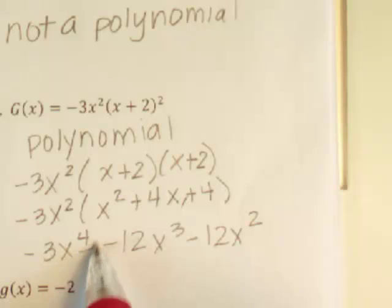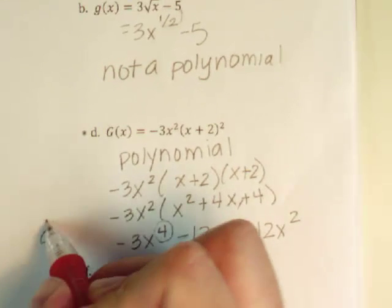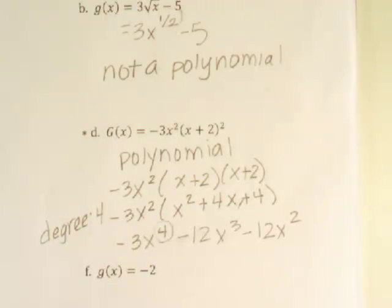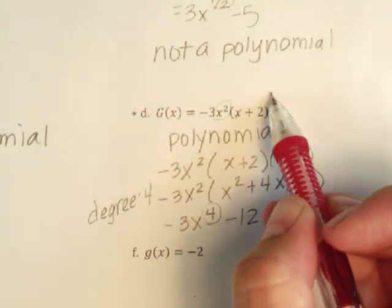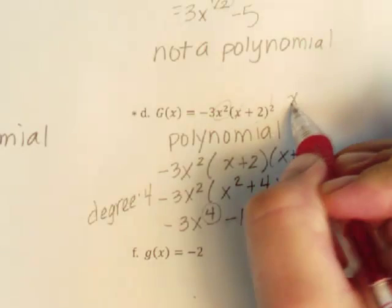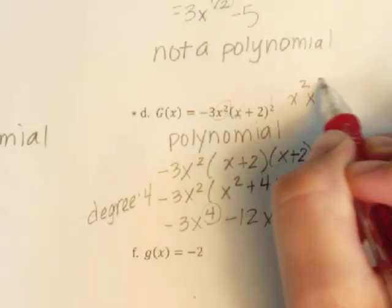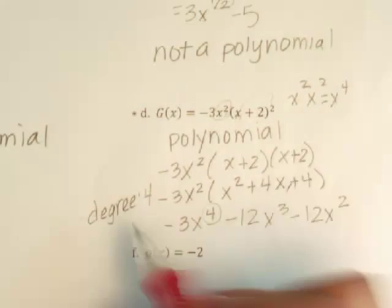So we can see that highest degree is, or highest exponent, is 4. Another trick way you can do this is take this guy and multiply it by x squared. So x squared times x squared. And we get x to the fourth, which shows you that that degree is going to be 4.